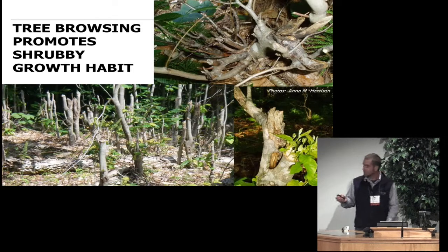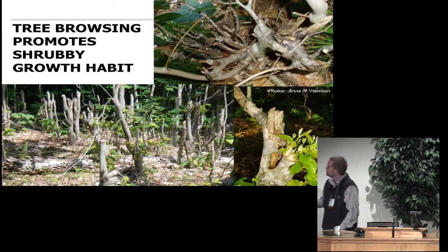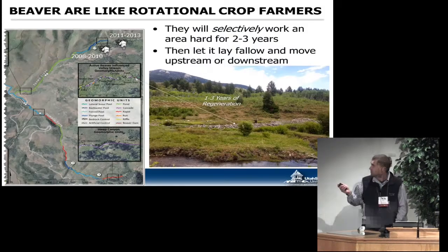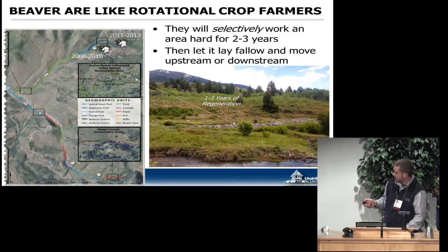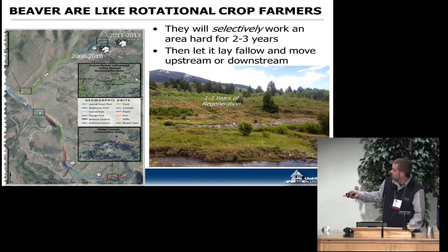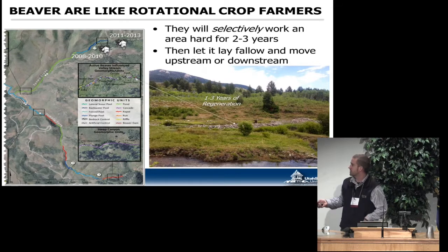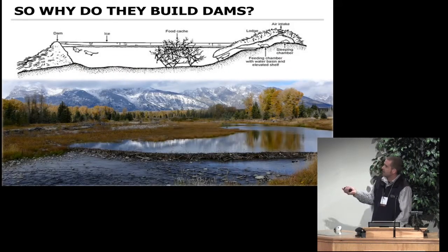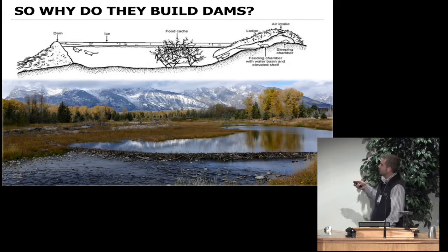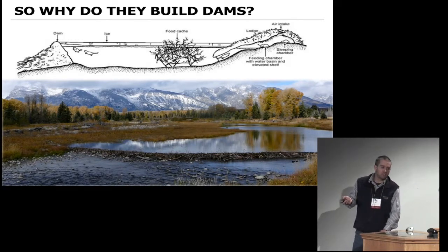Beaver are very much like rotational crop farmers. They don't come in and mow the whole thing down and ruin the place. You can think of it as a disturbance, but what they do is come in, selectively harvest these areas, lay them fallow for a while, then move upstream or downstream and work another area, and then come back and hit this area again. So why do they do all this stuff to the forests you care about? They do it partly because some of those things taste good and because they have to manipulate their environments to make a living.